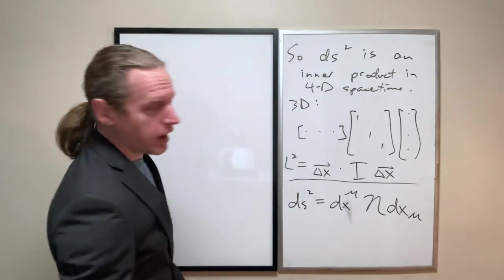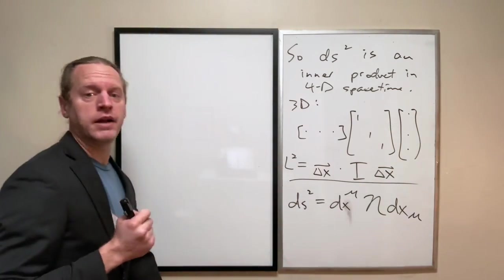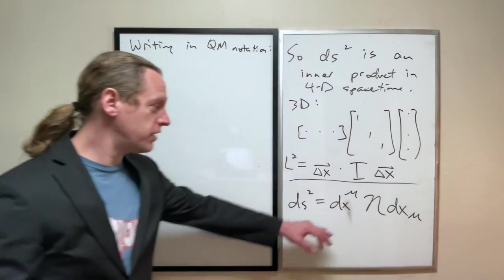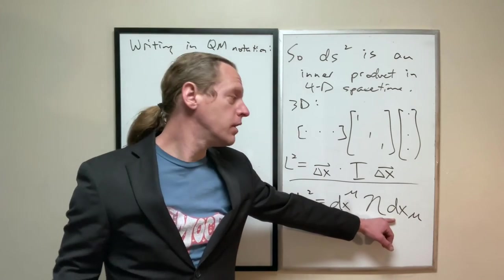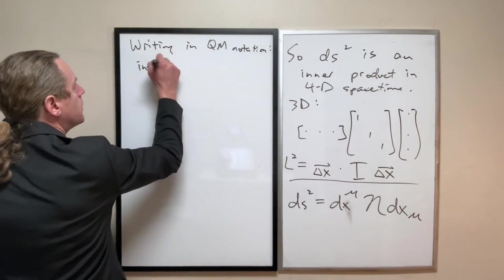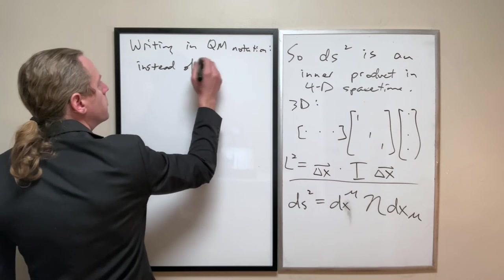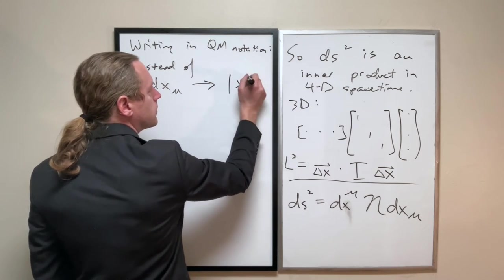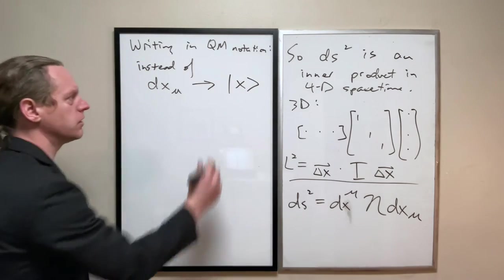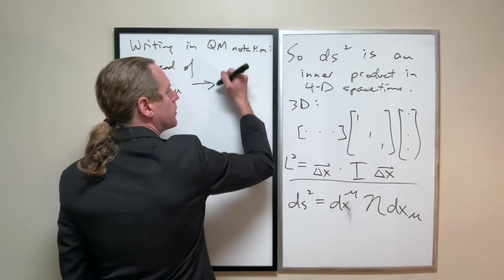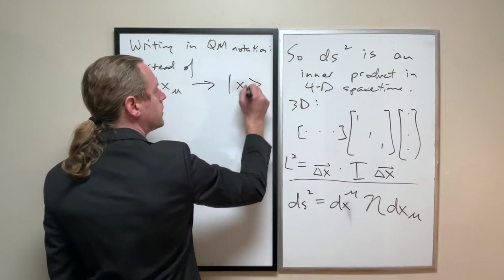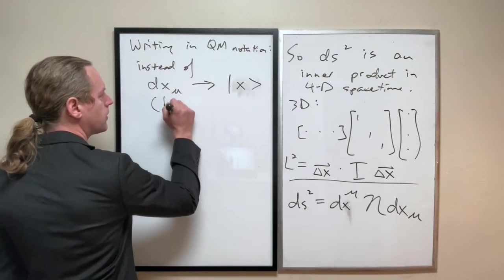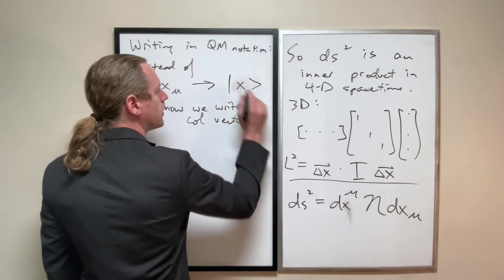And specifically, I'm going to do two things here. Now, if you want to write it in the quantum mechanics style, and this is kind of fun, so this exact quantity here, we're going to see written slightly differently in quantum. Instead of dx mu, we're just going to call that this. We just write dx like that. It's a new way of writing just a column vector.